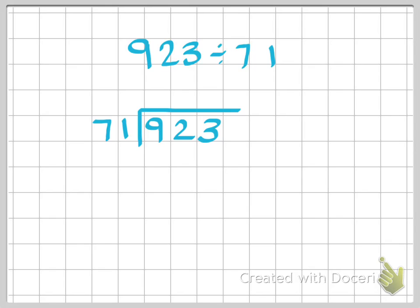So we're going to go ahead and start dividing 71 into 923. The thing that we need to think about is you probably don't know your multiples of 71 — me either. So what we need to do is figure out our multiples of 71. You don't have to write them all out, and you certainly don't have to do this method. This is just one method that is super popular. It's called doubles. So we know that 1 times 71 is 71, and 2 times 71 is just when we double it, which ends up being 142.